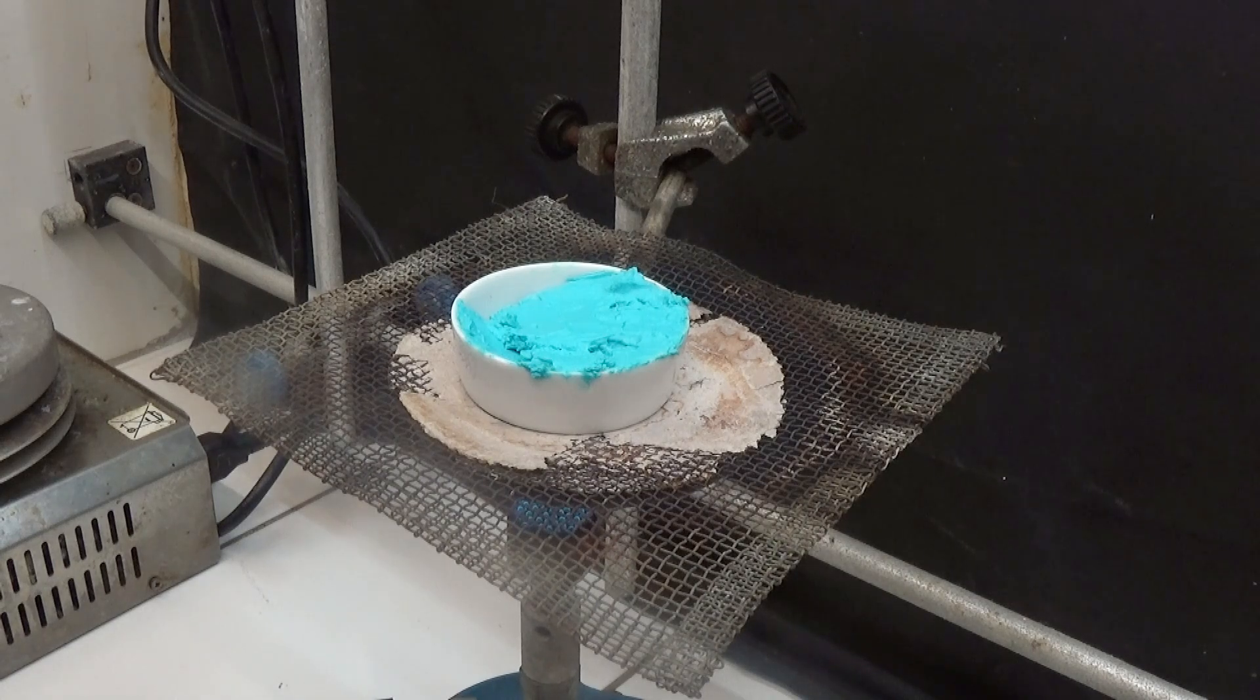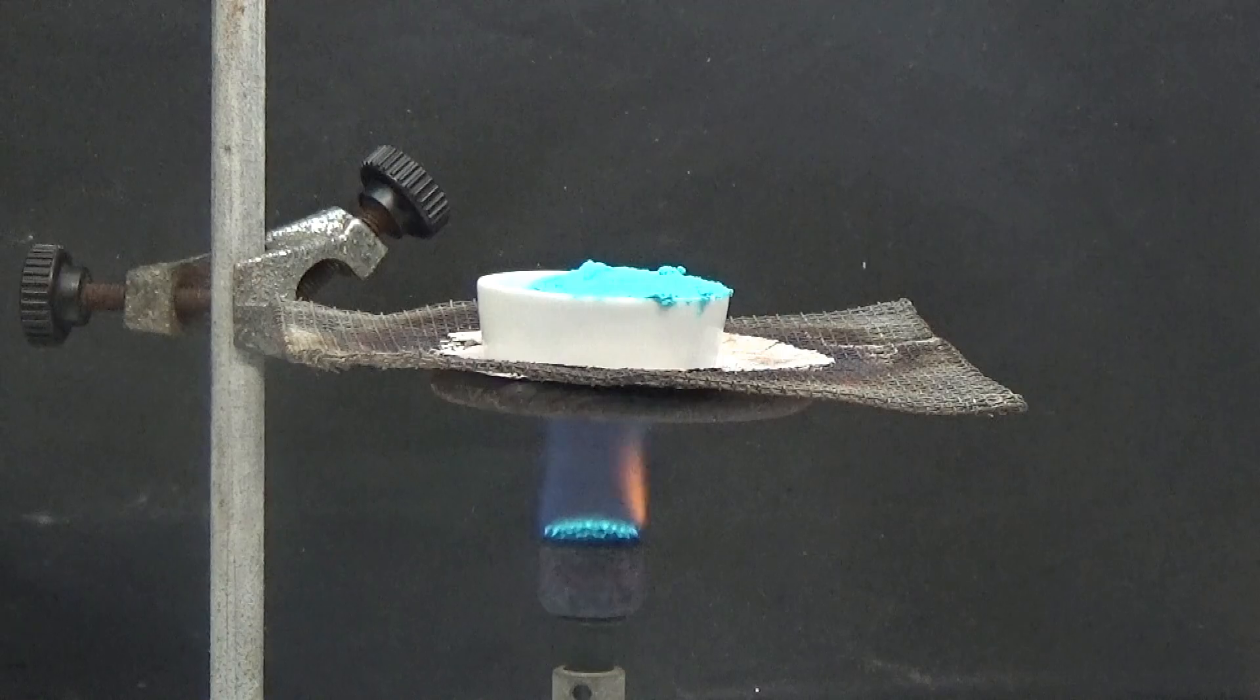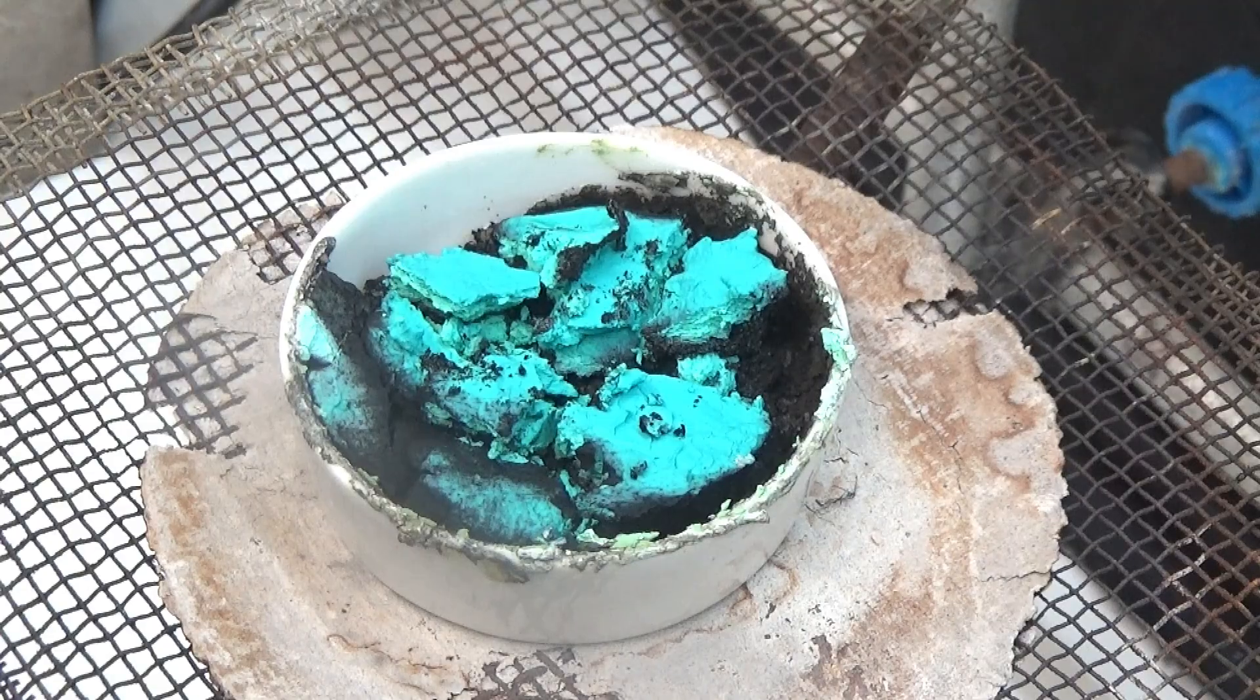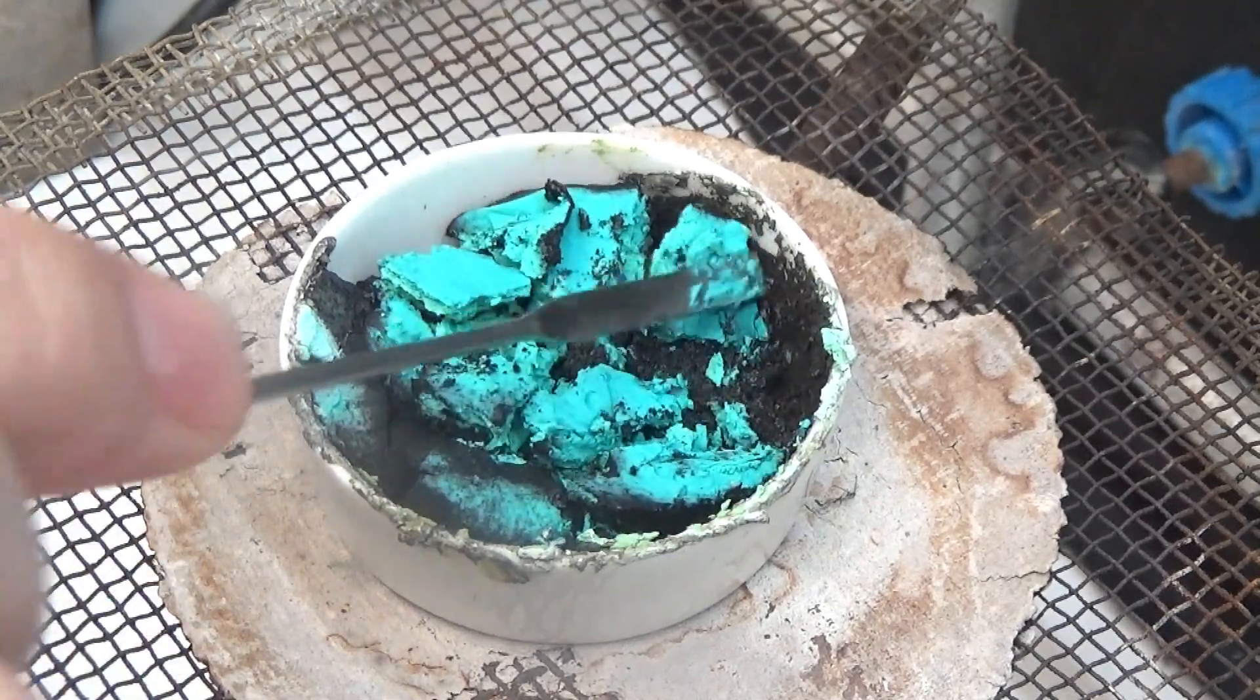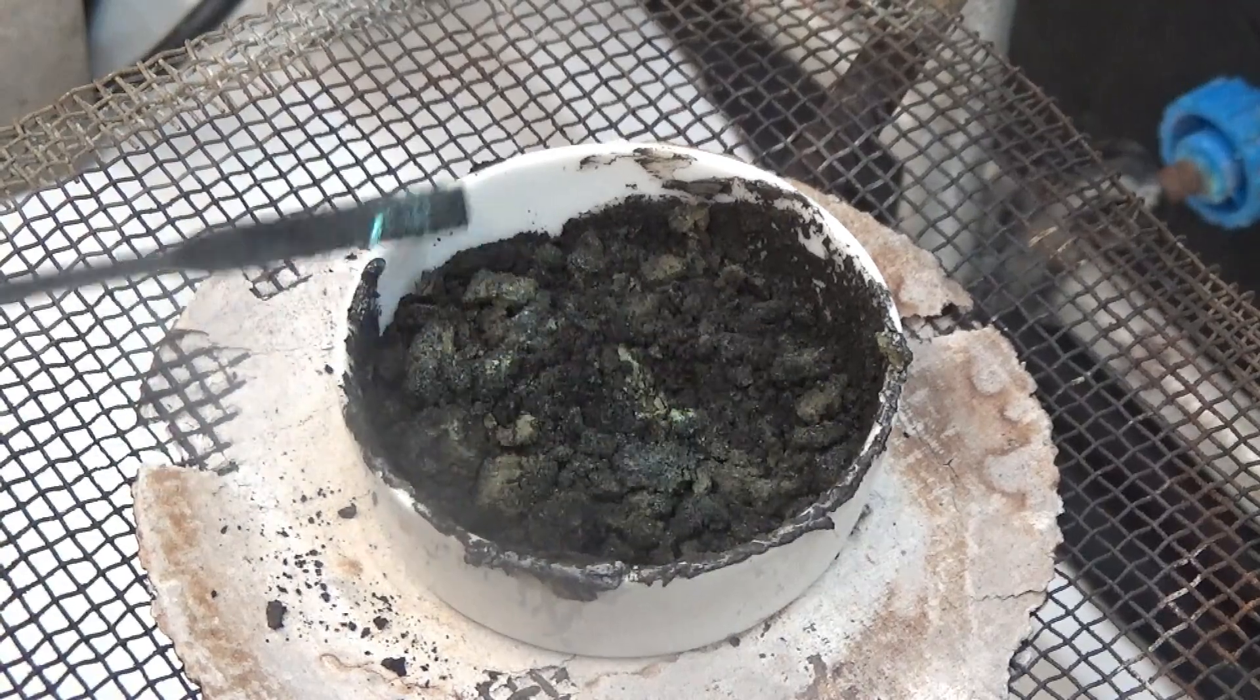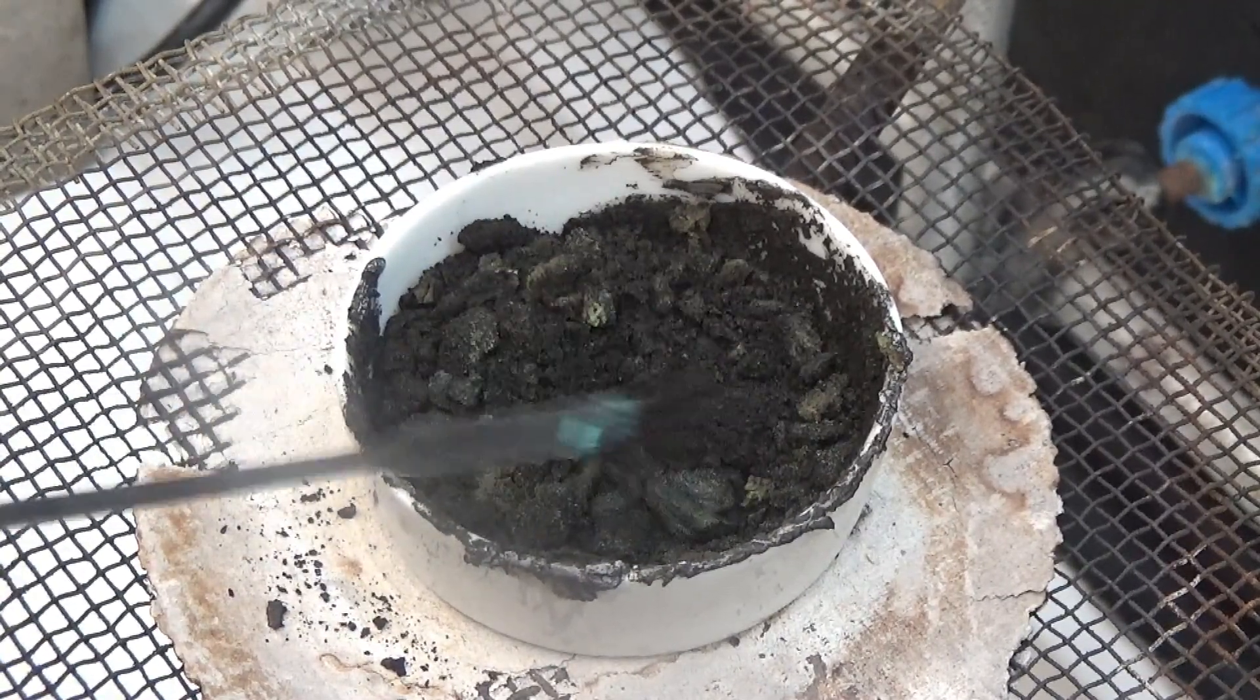The obtained carbonate is heated in a porcelain capsule with the flame of a burner, first with soft flame and then with strong flame. The color change of the carbonate from blue to black is observed. Stir with a spatula to homogenize the product. When heating the copper carbonate, carbon dioxide is released leaving the copper oxide in the capsule.